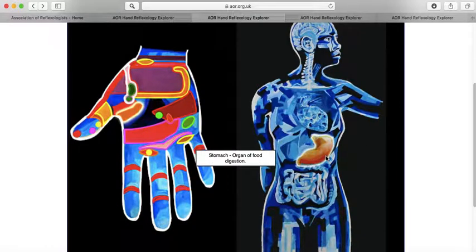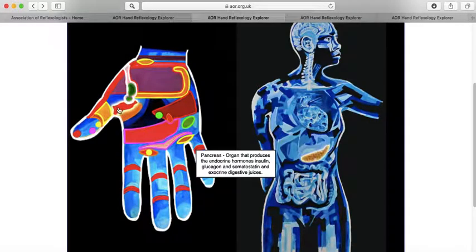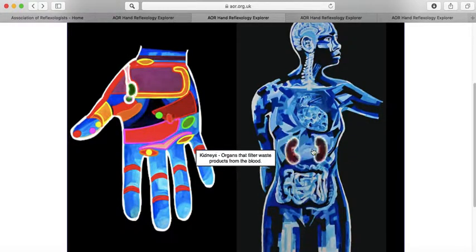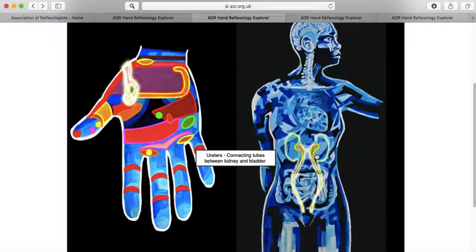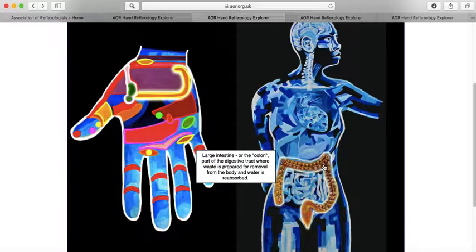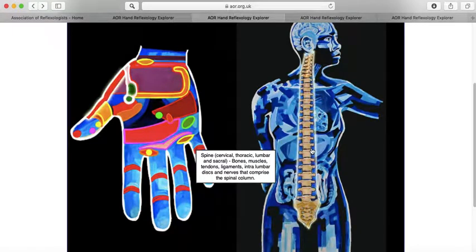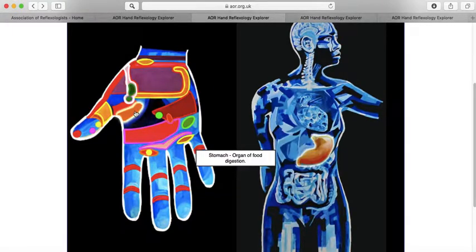The stomach is here. And then when you click on the pancreas, you can see. It's a bit difficult to actually just select the pancreas without actually going on to the reflex. But you can see how the different parts of the body are reflected in this chart.